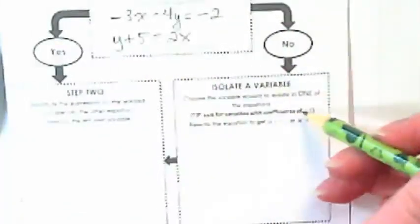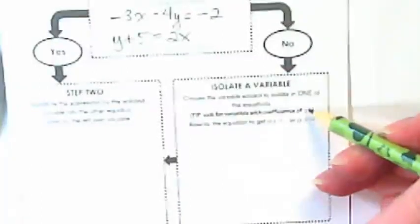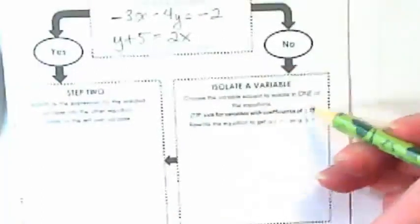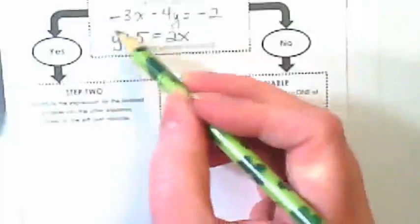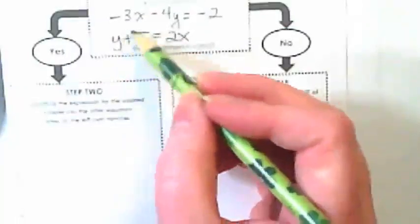You're going to choose the variable easiest to isolate in one of the equations. What do you think will be the easiest? The bottom one, yeah. If you notice the tip here, it says look for variables with a coefficient of plus or minus one. This y looks like it'll be easy to get by itself, doesn't it?